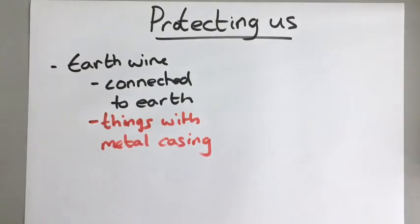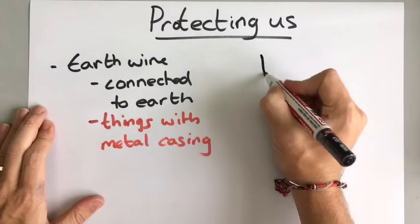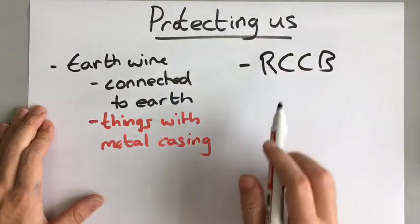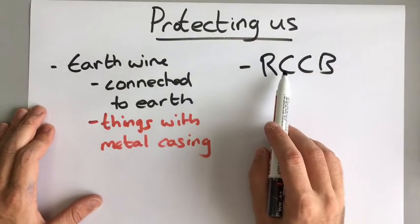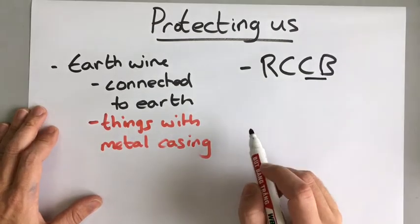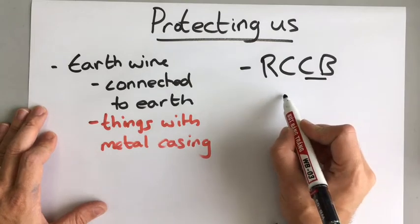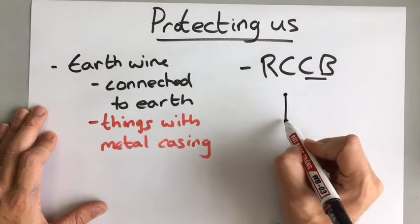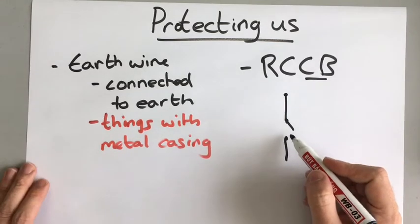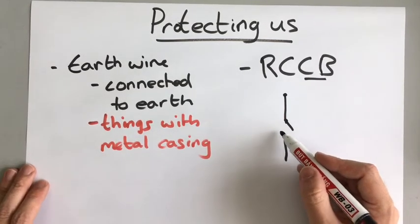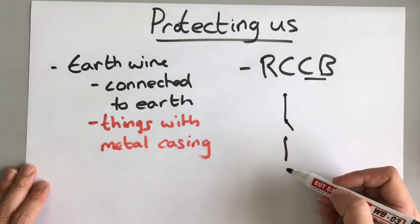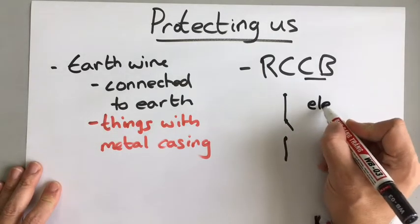Now the second thing that we have in our homes is called an RCCB. Now an RCCB stands for residual current circuit breaker and a circuit breaker which we call it for short is a piece of electronics which is essentially a switch and if the current flowing through a circuit is too high the switch automatically switches off and it does that by electromagnetism.